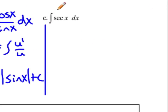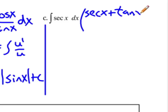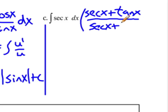For part c, we want to find the integral of secant x, and this one's a little bit tougher. The first thing we want to do is multiply top and bottom by secant x plus tangent x over secant x plus tangent x.